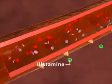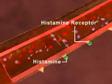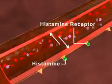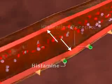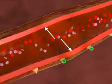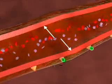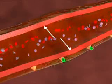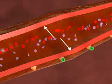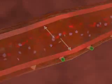These mediators cause dilation of the surrounding blood vessels and increase their permeability. This results in the nasal stuffiness, sneezing, and mucous discharge of allergic rhinitis.